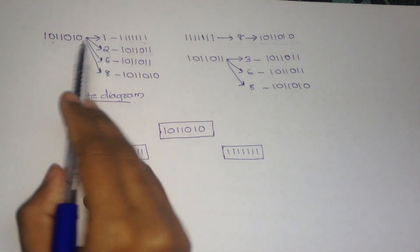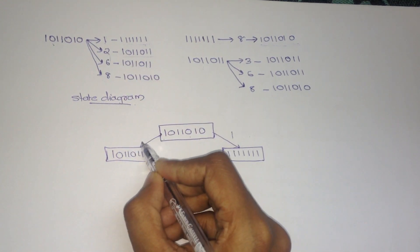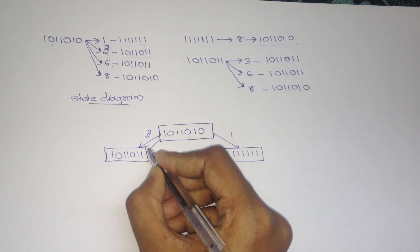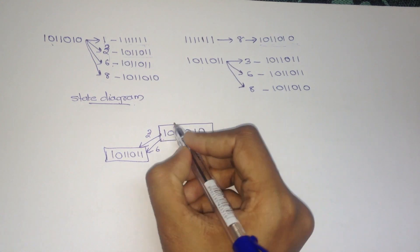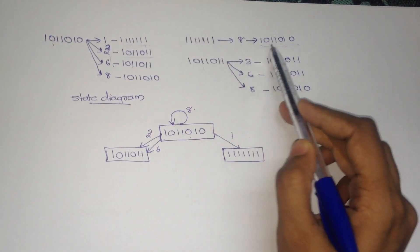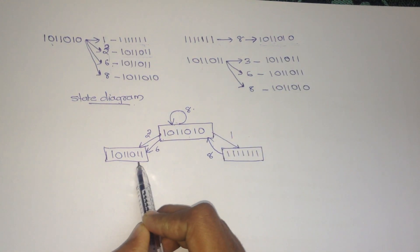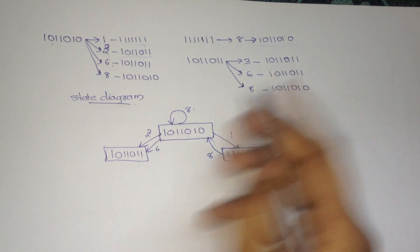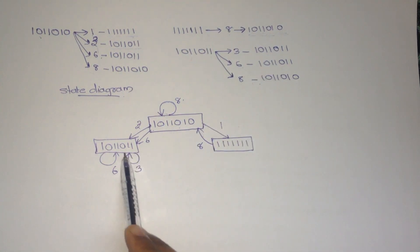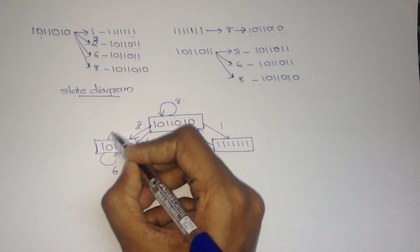Now we have to mark the transitions. During the initial collision vector, at the first stage it points to this new state. During the second stage, it points to this stage. During the third stage and sixth stage, it also points to this stage. During the eighth stage, it points to itself — that is a self loop. From the new states, at the eighth stage, it points back to the initial collision vector.